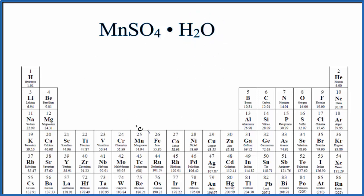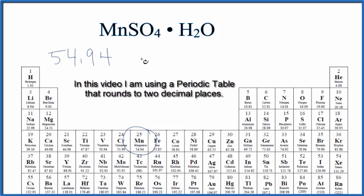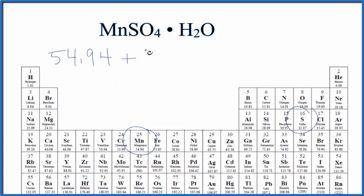On the periodic table, manganese is 54.94 grams per mole. I won't write that each time, we can add that at the end. Sulfur is 32.07 grams per mole,